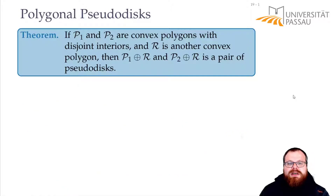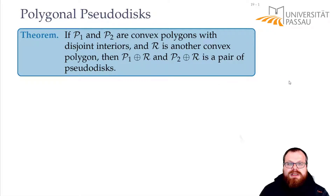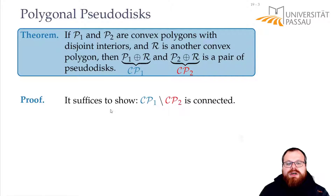Now we use this. If we have two convex polygons with disjoint interiors — our obstacles P1 and P2 — and another convex polygon R (our inverted robot), then the Minkowski sums P1⊕R and P2⊕R, which are our configuration polygons CP1 and CP2, form a pair of pseudodisks. We prove this by contradiction: suppose the boundary of CP1 intersected with the interior of CP2 is not connected.